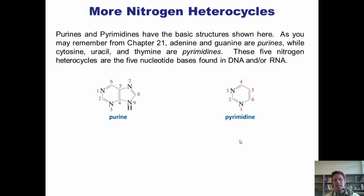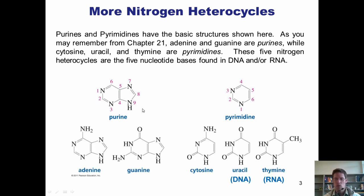As I mentioned back in chapter 21, one of the most important family groups of nitrogen heterocycles is that of the purines and pyrimidines. Purines and pyrimidines have the basic structure shown here on this slide. As you may have learned in biology courses, adenine and guanine are the two nucleotide purines, while cytosine, uracil, and thymine are the pyrimidines. These five nitrogen heterocycles together constitute the five nucleotide bases found in DNA and or RNA.